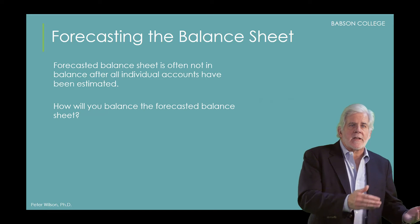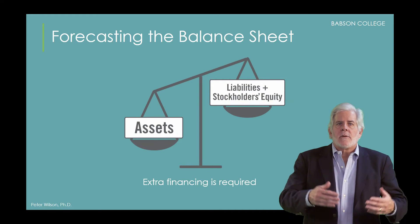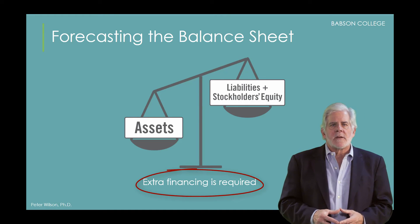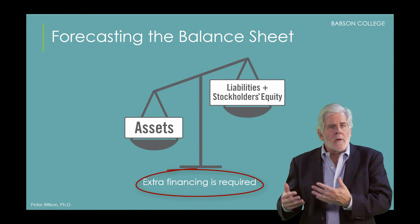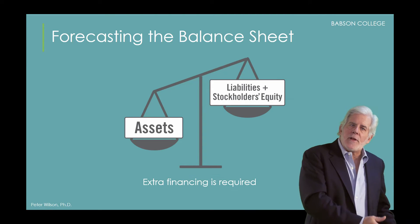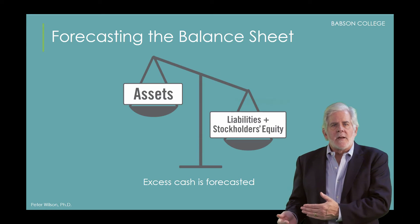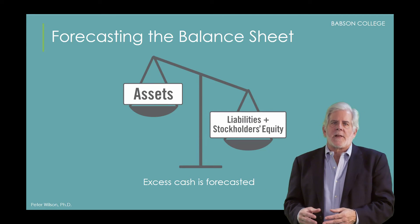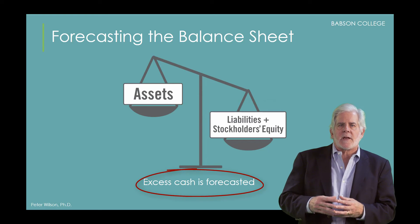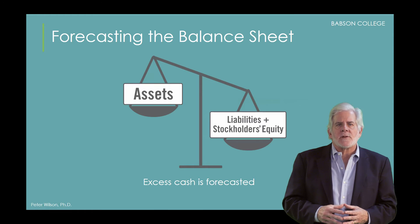If assets exceed liabilities and stockholders' equity, this means we need more financing to pay for the increase in assets, which means we'll need to borrow more funds or increase owners' investment. If liabilities and stockholders' equity exceed assets, this means we'll have more financing than we need, and we'll need to make a decision about what, if anything, to do with the excess cash. We'll discuss this decision at the end of our forecast.